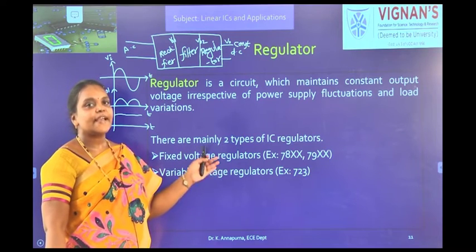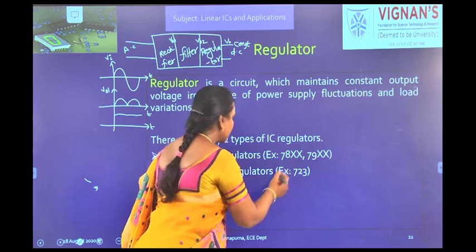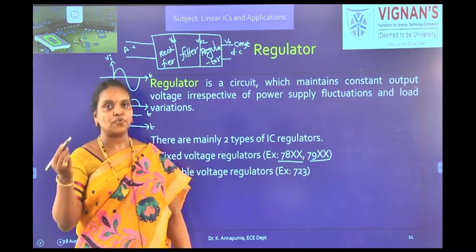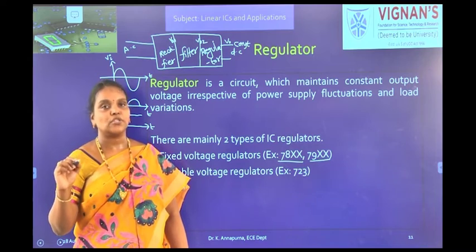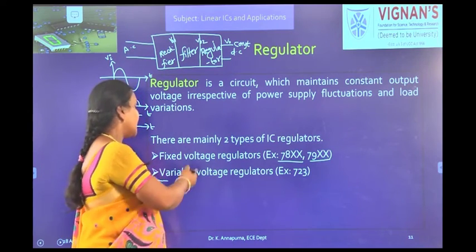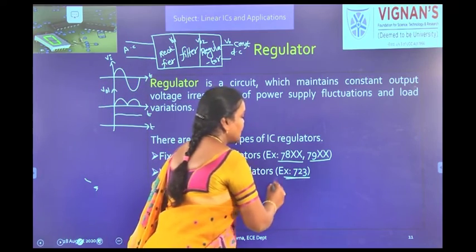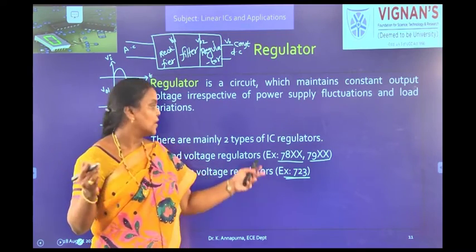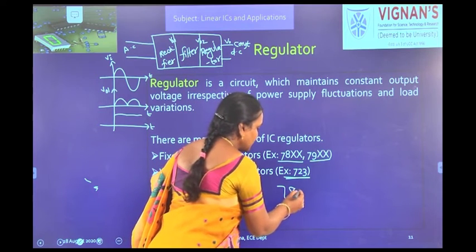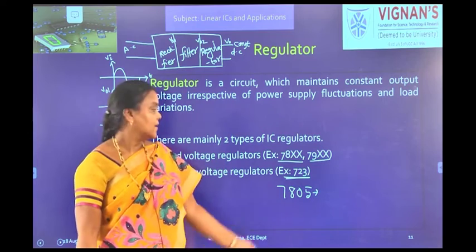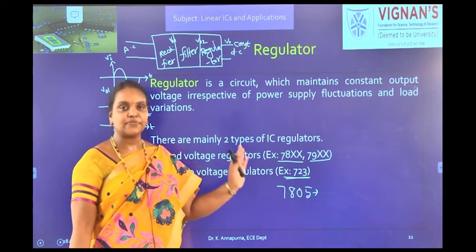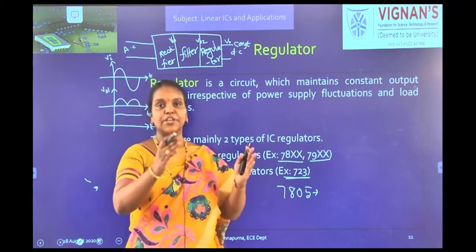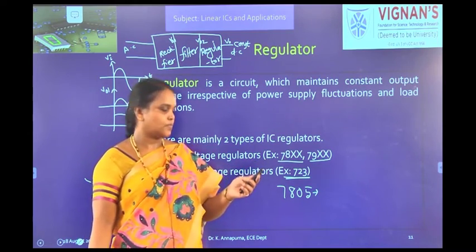There are mainly two types of IC regulators: fixed voltage regulators and variable voltage regulators. Fixed voltage regulators have two types — 78 series and 79 series. The 78 series gives a positive constant voltage output; the 79 series gives a negative constant output voltage. For example, 7805 always gives plus 5 volts — if we need 6 volts, that regulator would not be helpful. Variable voltage regulators give a range — you can set from 3 to 20 volts, whatever voltage you require.